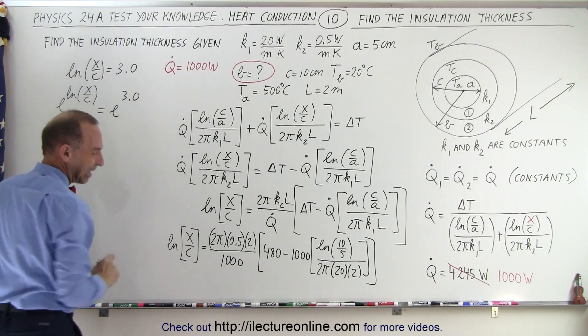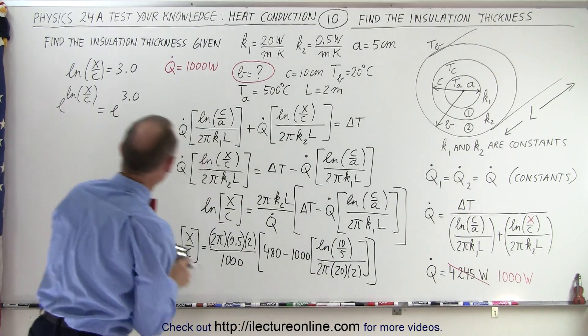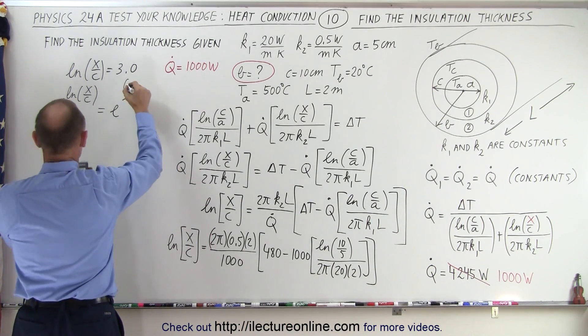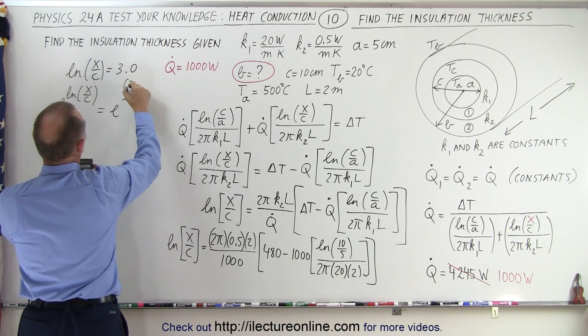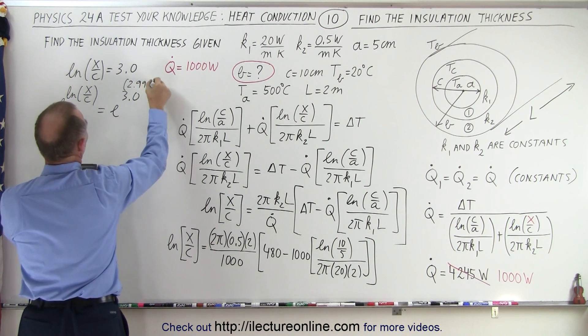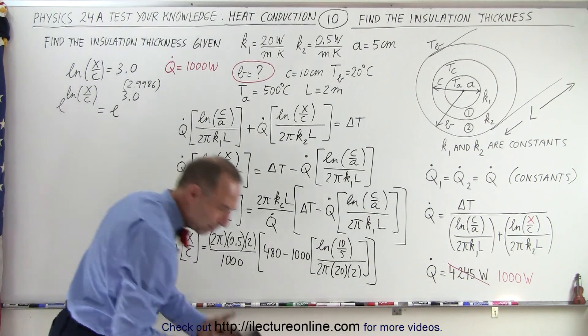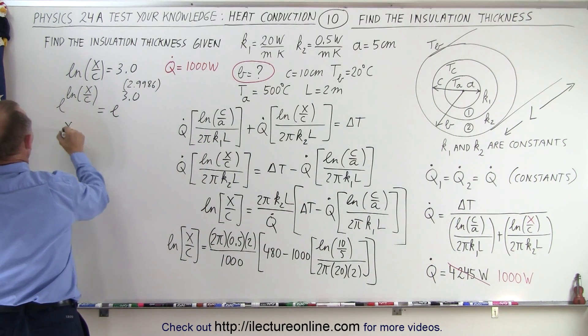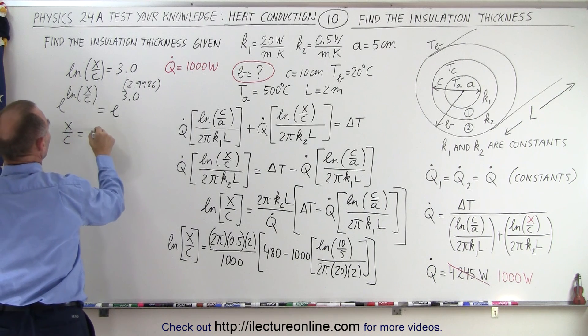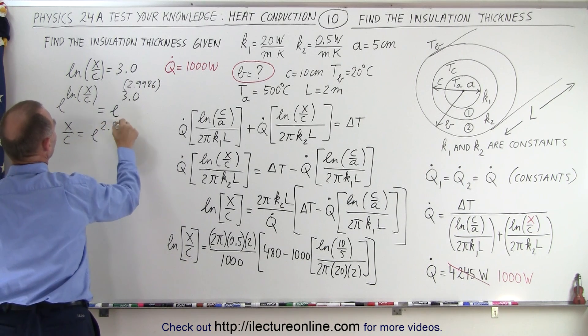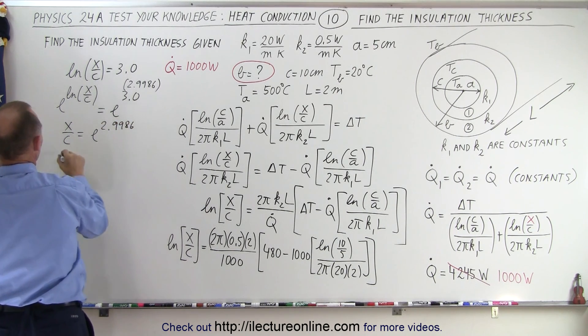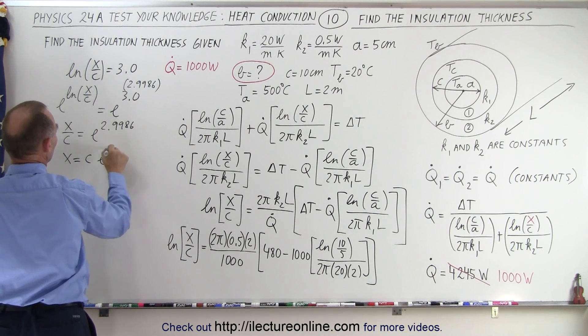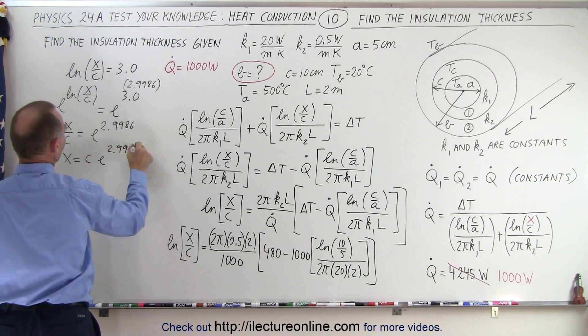Now, since that's an exponent, I better use the exact number I get. So instead of 3.0, it's 2.9986. Ah, close enough, 2.9986. I don't think we need to go that particularly accurate. So when we do that, we get x over c is equal to e to the 2.9986. And so therefore, x is equal to c times e to the 2.9986.